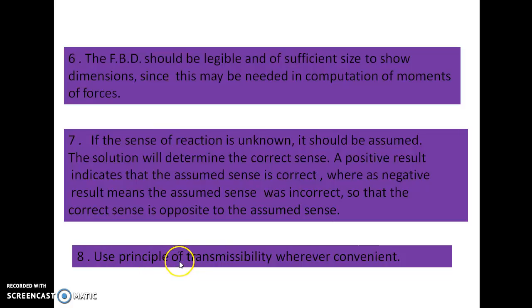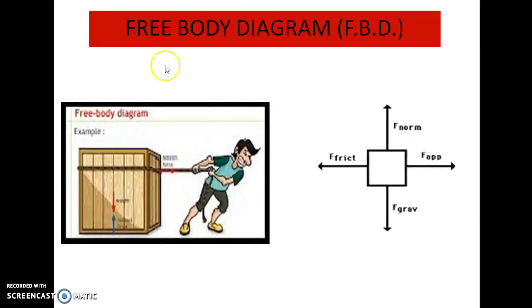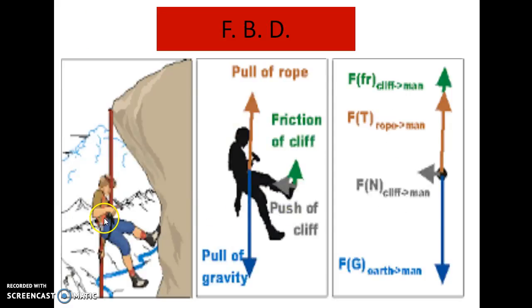Next point is use principle of transmissibility wherever convenient, which can be shown by this diagram. A man is climbing a rock with the help of rope, which is studied as pull of rope, friction of cliff, push of cliff, and pull of gravity.